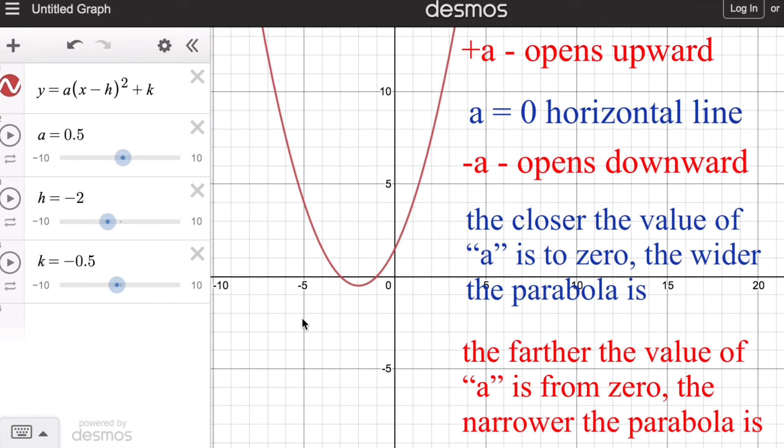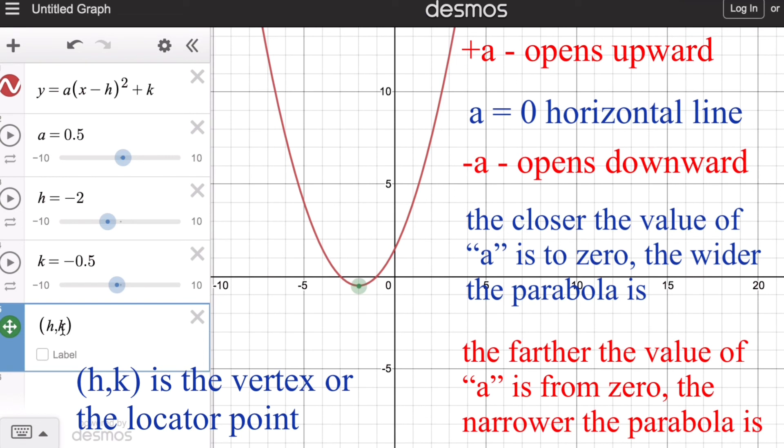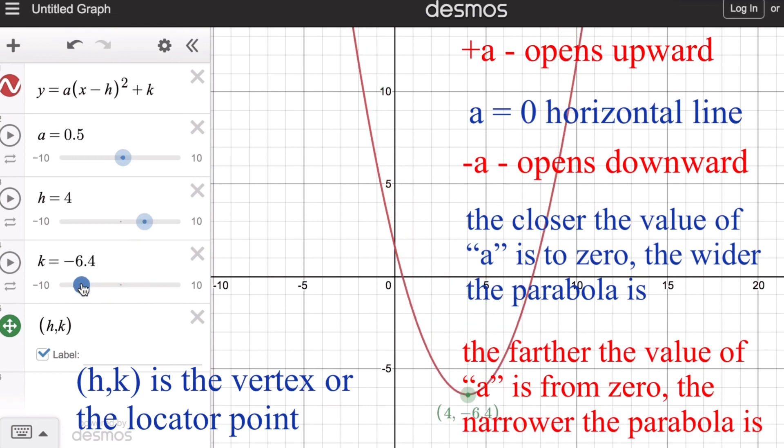Please remember that the coordinates h, k is the vertex of the parabola, where the h moves or translates the graph left or right, while the k translates the graph up or down.